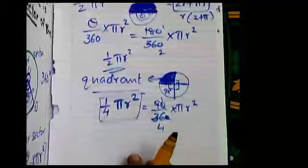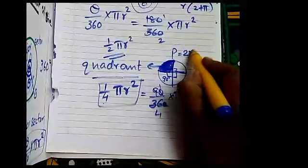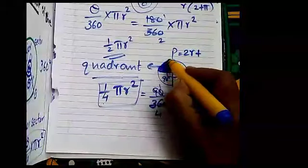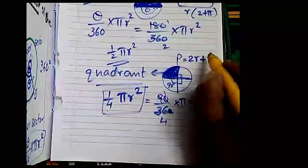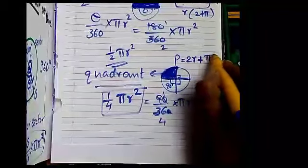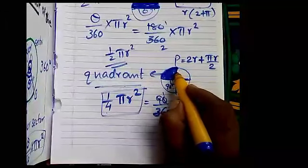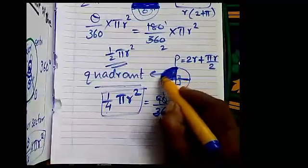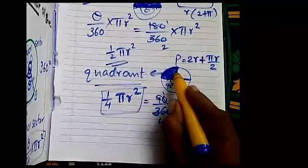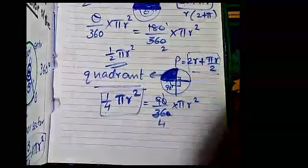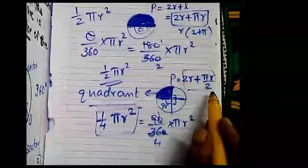In the same way, the perimeter of the quadrant: here also there are 2 radii, so it is 2R plus the arc length. The arc length is one-fourth of the total circumference: ¼ of 2πR = πR/2. So the perimeter of the quadrant is 2R + πR/2.